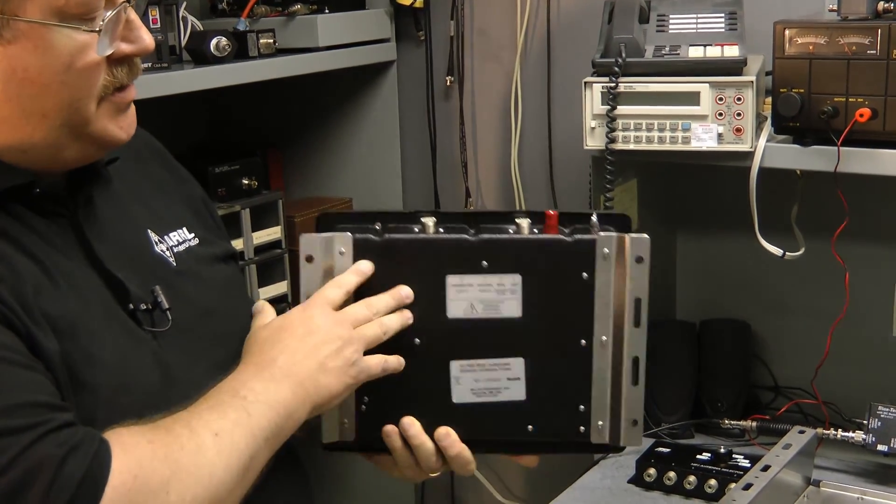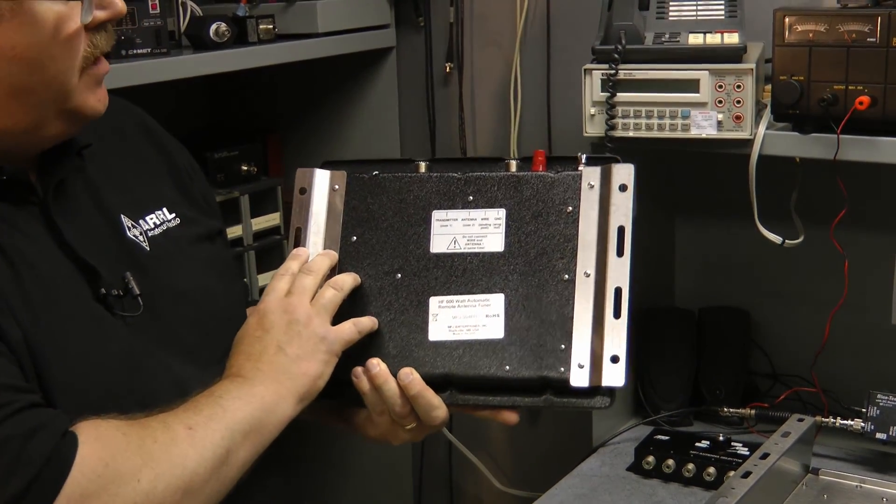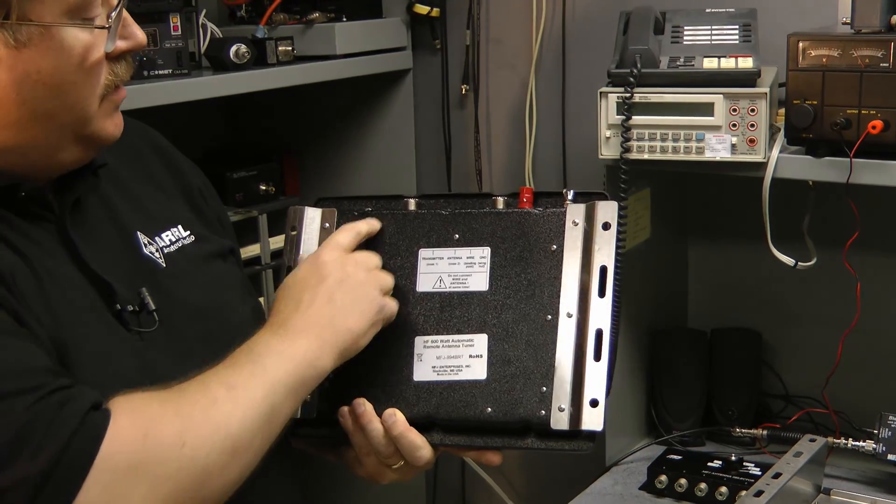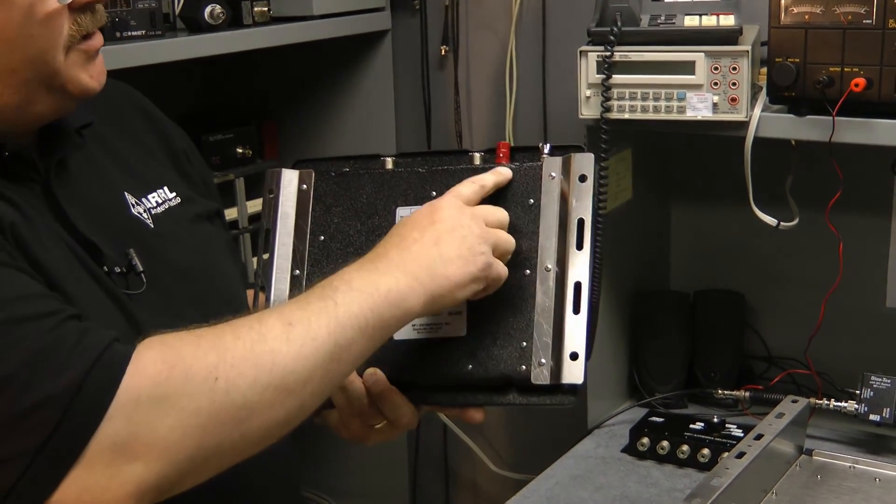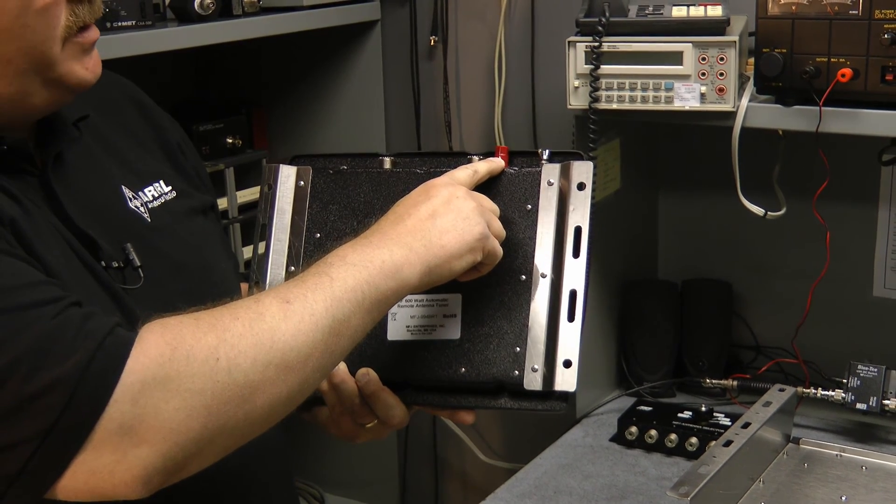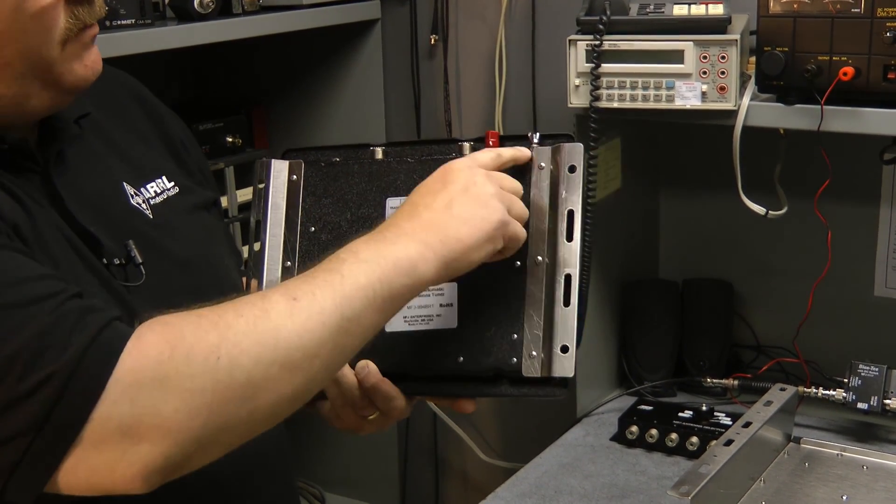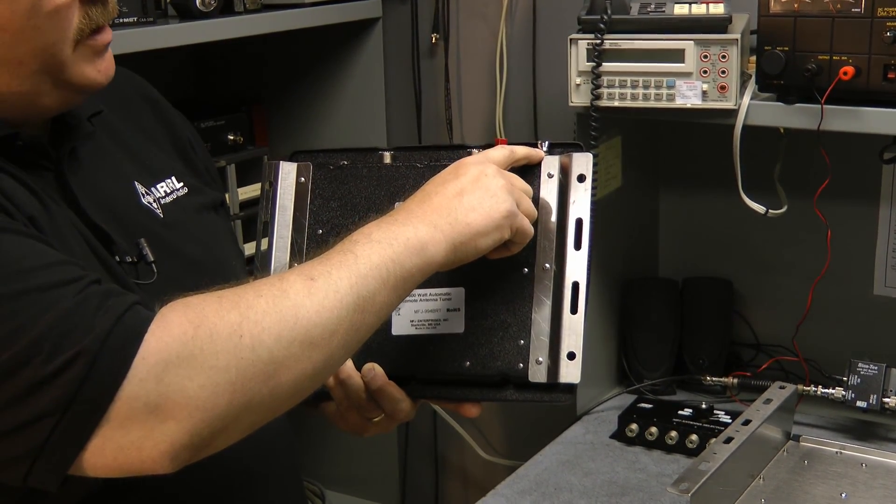Sturdy case, plastic on the underside, metal mounting brackets. Hookup is very simple. Transmitter goes here, the antenna goes here. If you're running a single wire, a random antenna, it goes right to this red binding post. And of course, most importantly, is the ground connection.